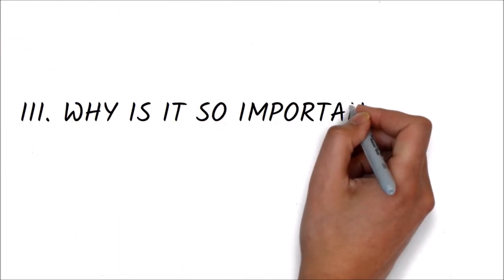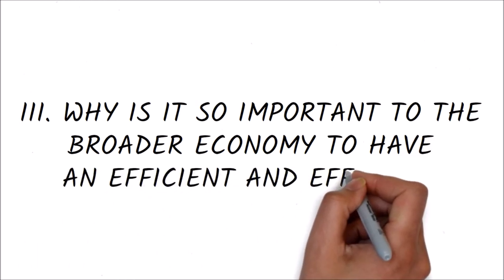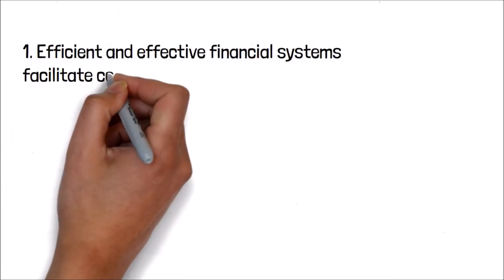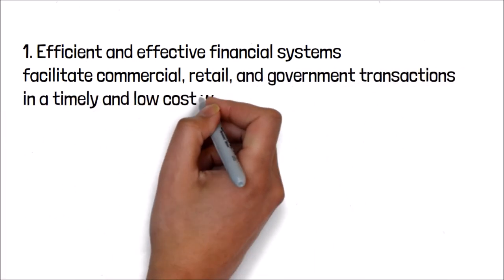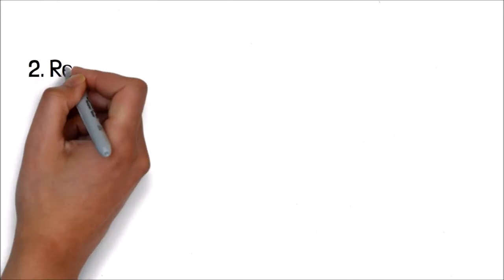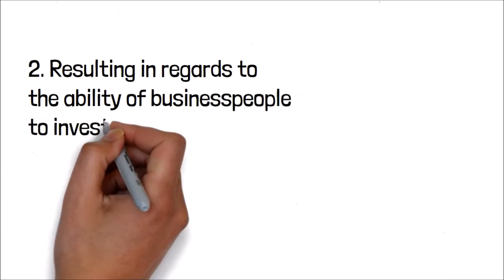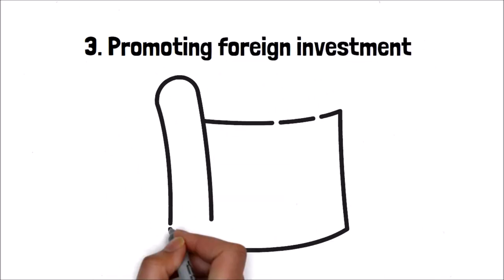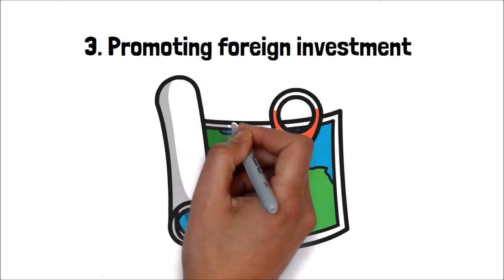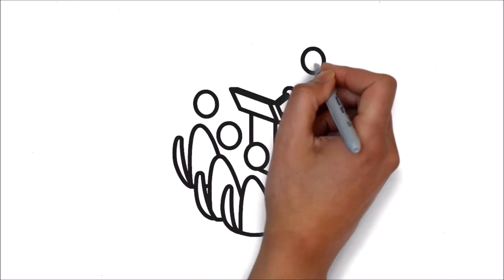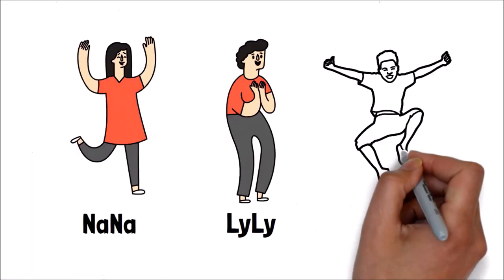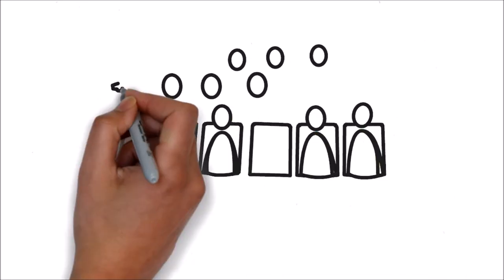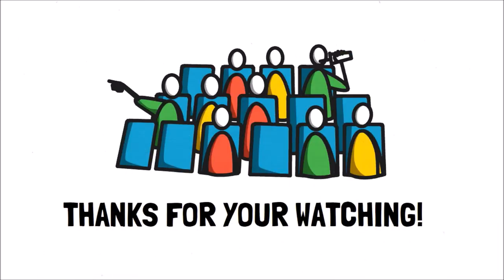Why is it so important to the broader economy to have an efficient and effective financial system? Efficient and effective financial systems facilitate commercial, retail, and government transactions in a timely and low-cost way, resulting in better ability for business people to invest in their firms and the flow of individual preferences for current spending and savings. They also promote foreign investment by providing a mechanism for the transfer of resources across geographical boundaries. After all, Nana, Lily, and Wang Wang feel happy about getting what they want.